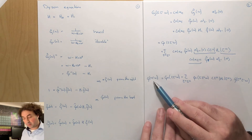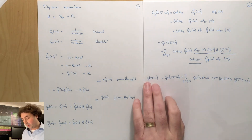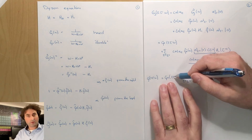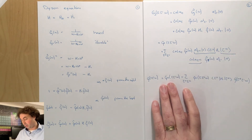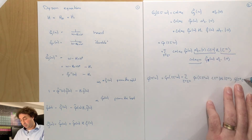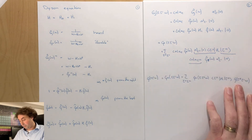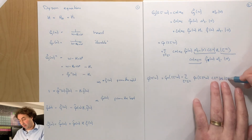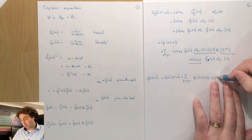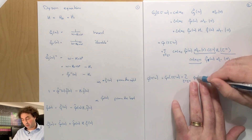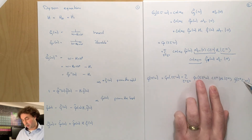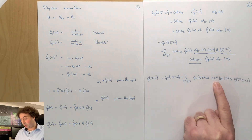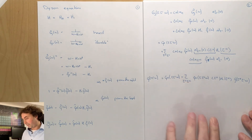So the propagation of a particle from quantum state tau prime to tau in a Hamiltonian given by H0 plus H1 can be seen as: propagation for H0 from tau prime to some state tau triple prime, then a scattering by H1 from state tau triple prime to tau double prime, and then a propagation by the bare Green's function from tau double prime to tau. You still go from tau prime to tau, but via an intermediate state, and you have to sum over all possible paths you can take.